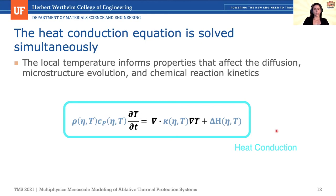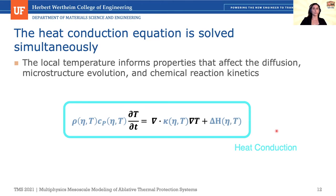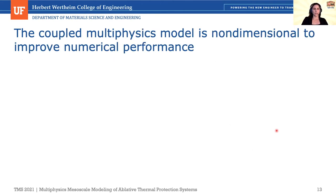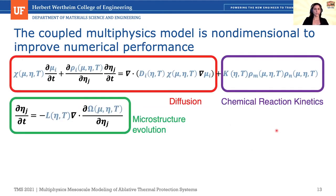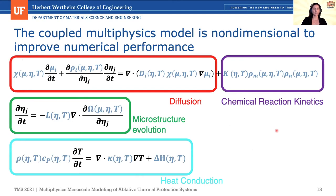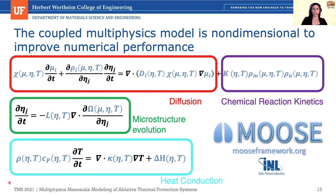The most important part of implementing heat conduction is that the reaction rate constant is a function of temperature. It is critical that we have different local temperatures throughout the domain because the reaction rate depends on that. We implement the full model — diffusion, chemical reactions, microstructure evolution, and heat conduction — in non-dimensional form and create an application based on the MOOSE framework, an open source nonlinear finite element solver available at mooseframework.org.